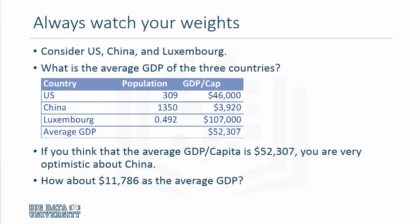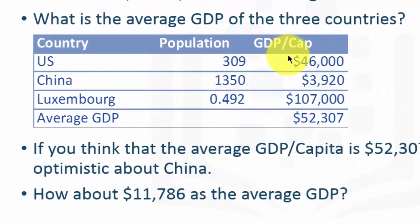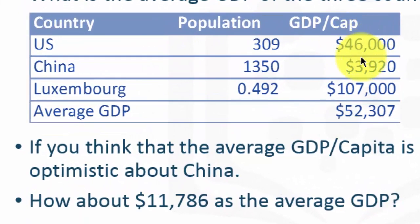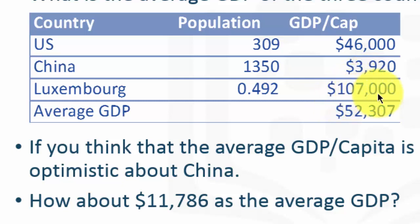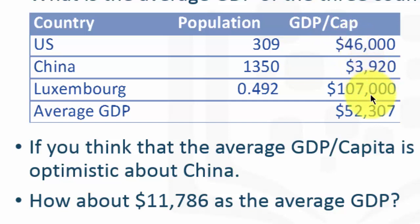Let me illustrate weighted means using GDP, or per capita GDP, for three countries: the United States, China, and Luxembourg. The per capita GDP for the United States is $46,000. For China, it's $3,920. And the average per capita GDP for Luxembourg is $107,000. If I were to compute the average GDP per capita for these three countries — U.S., China, and Luxembourg — I will add these three up and will end up with $52,307. That would be a wrong average calculation.